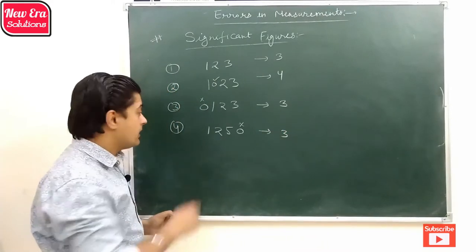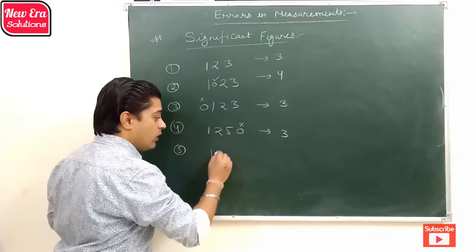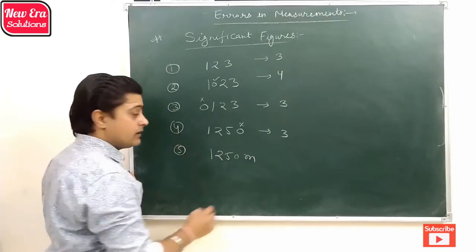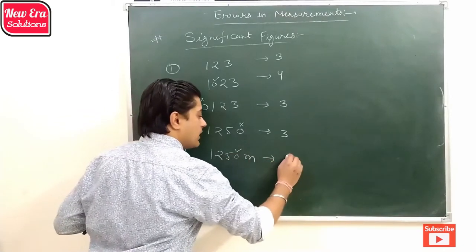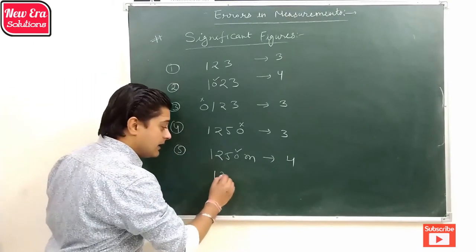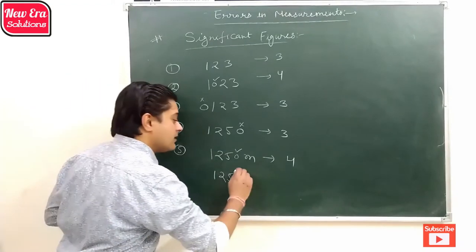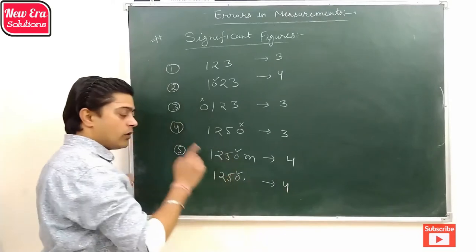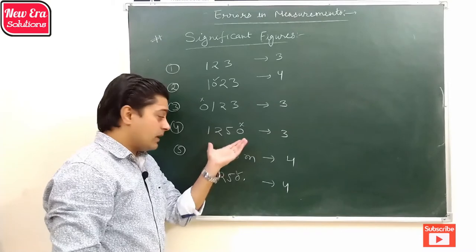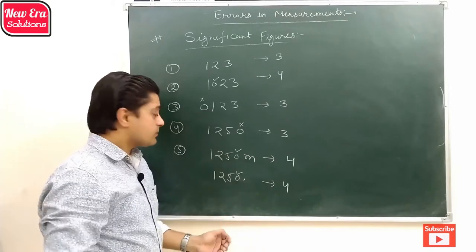But in the same concept, if the zero is on the right-hand side of a non-zero number and expresses a measurement, then the zero is countable and there are four significant digits. In the next rule, if there is a zero before the decimal point, then again the zero is countable and there are four significant digits. So in the expression without measurement and without decimal point, the zero is non-significant; otherwise the zero is significant.